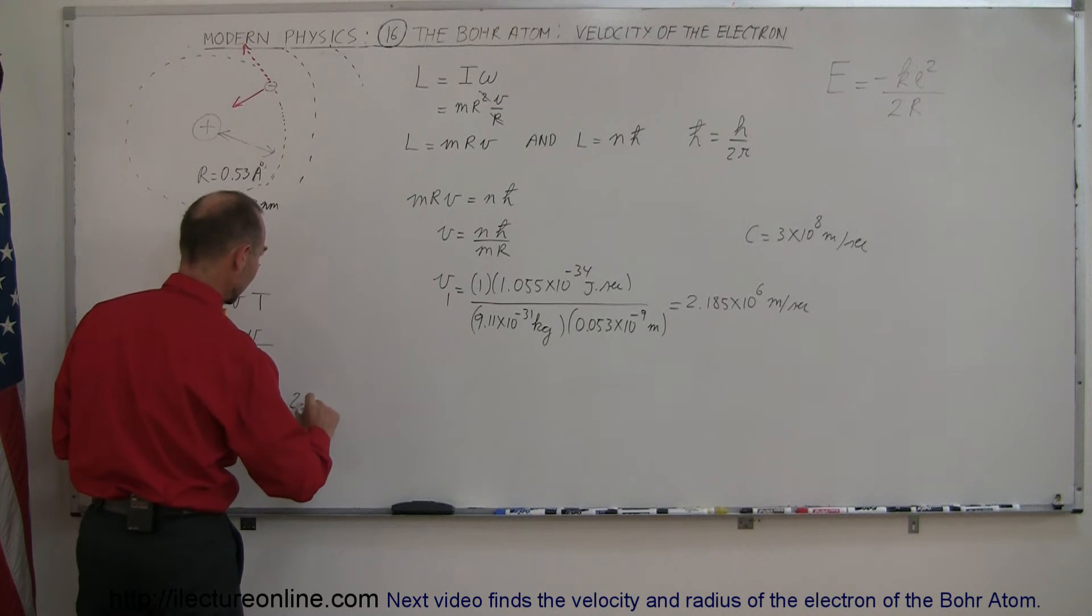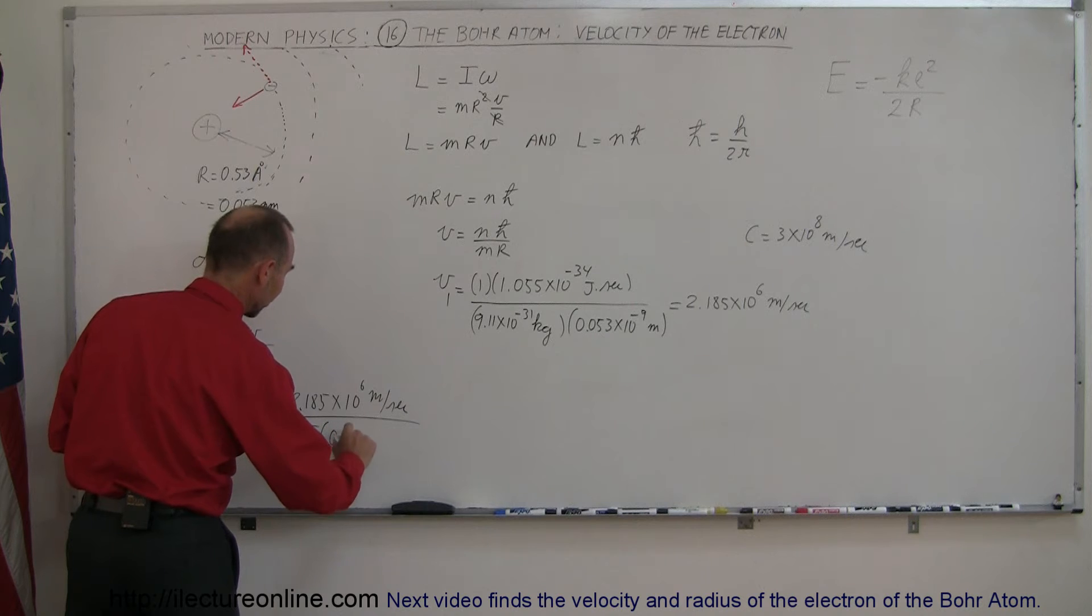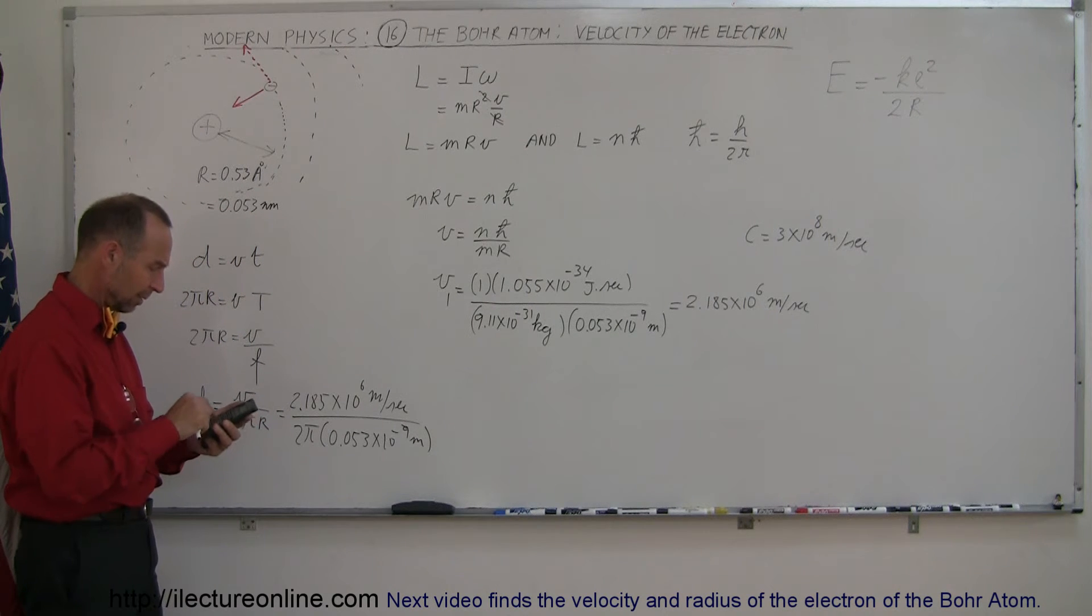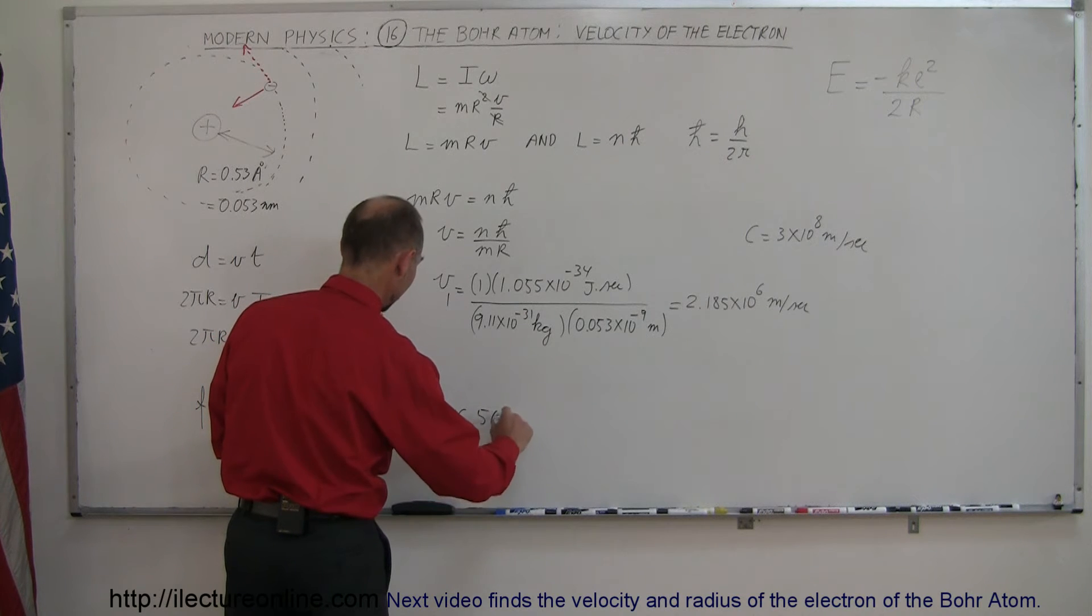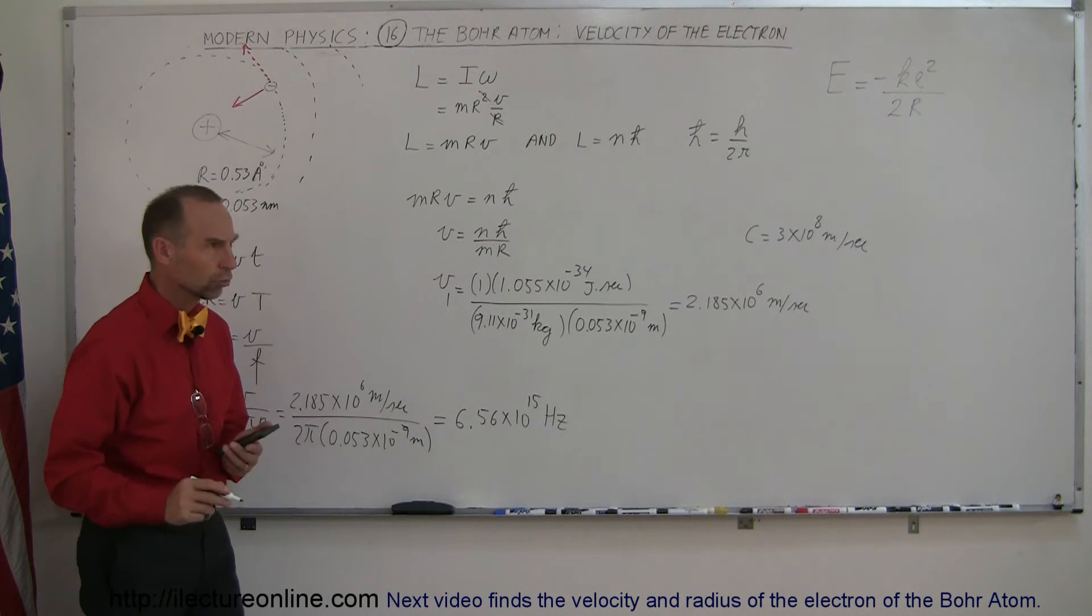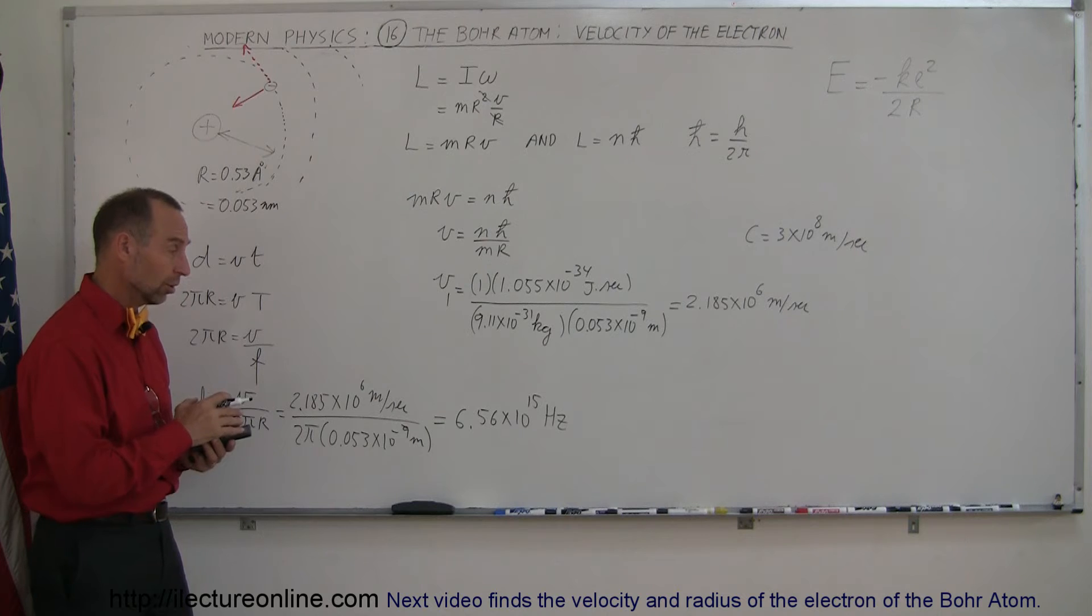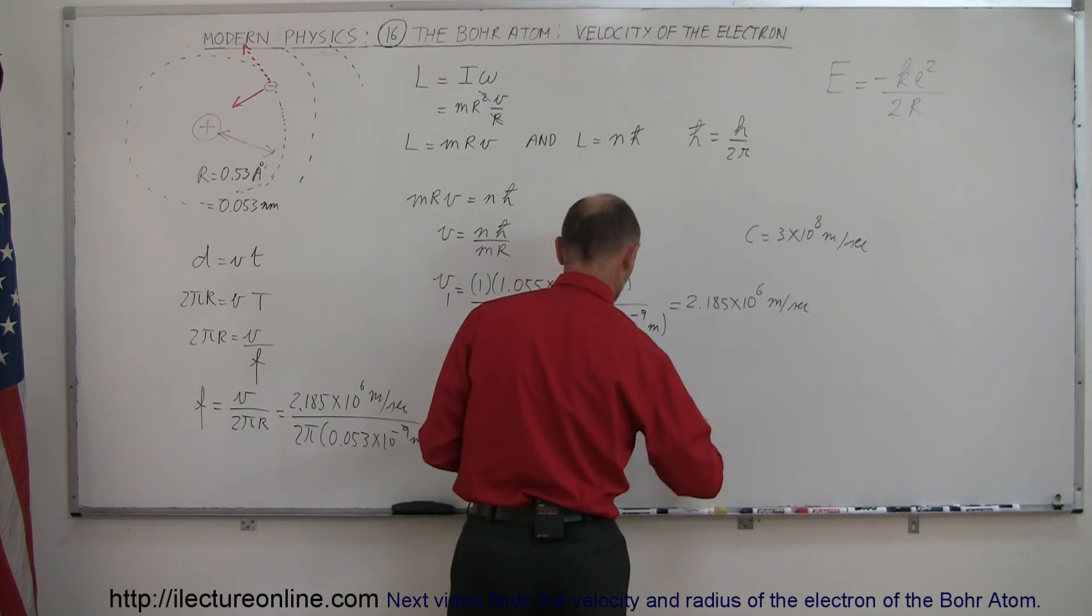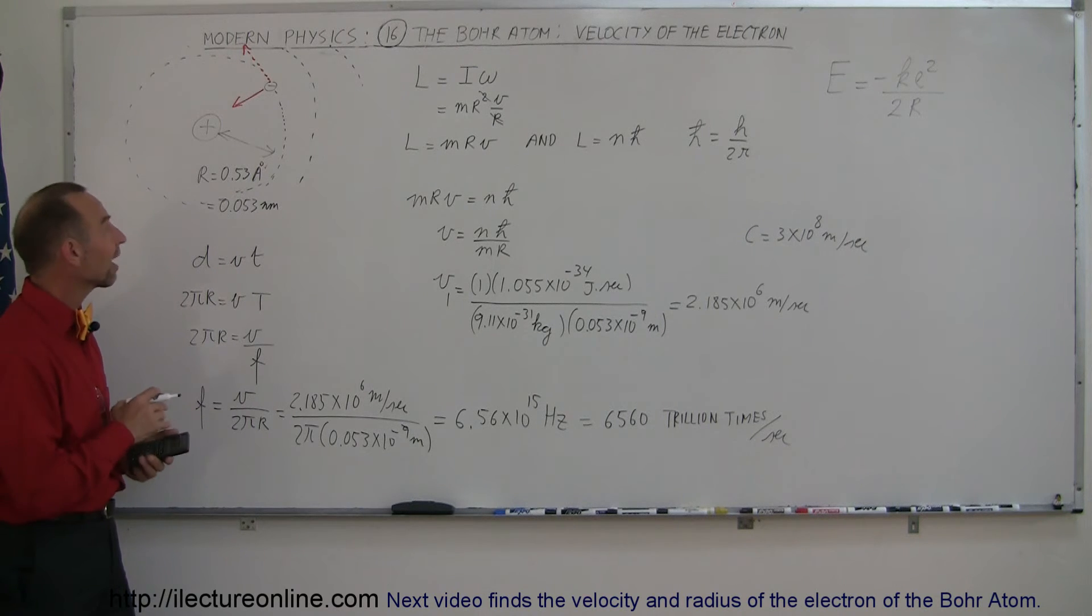So that would be equal to 2.185 times 10 to the 6th meters per second, and we divide that by 2π times the radius, which is 0.053 times 10 to the minus 9 meters. All right, that should be an interesting calculation. So divide by 2 and divide by π, and then divide by 0.053e-9 equals, and it is 6.56 times 10 to the 15th hertz. Wow, that's a big number, because 10 to the 9th is billion, 10 to the 12th is trillion, so this would be 6,560 trillion times per second. So the electron zips around the nucleus of a hydrogen atom more than 6,000 trillion times every second. That's quite amazing.